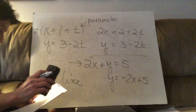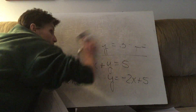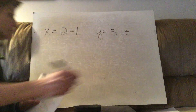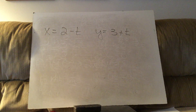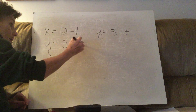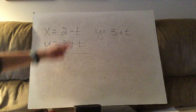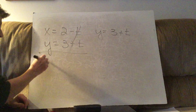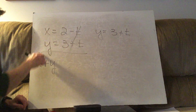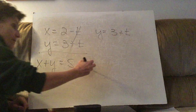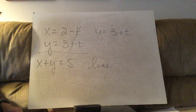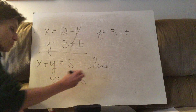Problem B: x equals 2 minus t and y equals 3 plus t. Since they're already set up for elimination, just add them: x plus y equals 5. That is another line. When you've got x's and y's with nothing squared, that's a line. You can write it as y equals negative x plus 5.